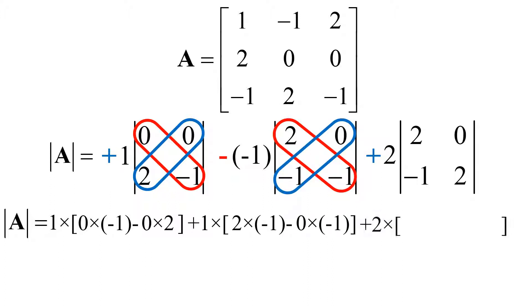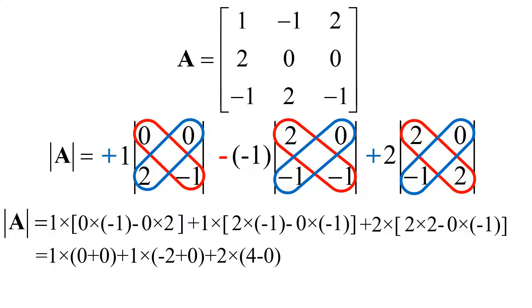The third term is 2 multiplied by 2 by 2 minus 0 by minus 1. This expression becomes 1 by 0 plus 1, and 1 by minus 2 plus 0, and 2 by 4 minus 0. It is minus 2 plus 8, then 6. So your determinant is 6, which is the same as the one from the previous slide.